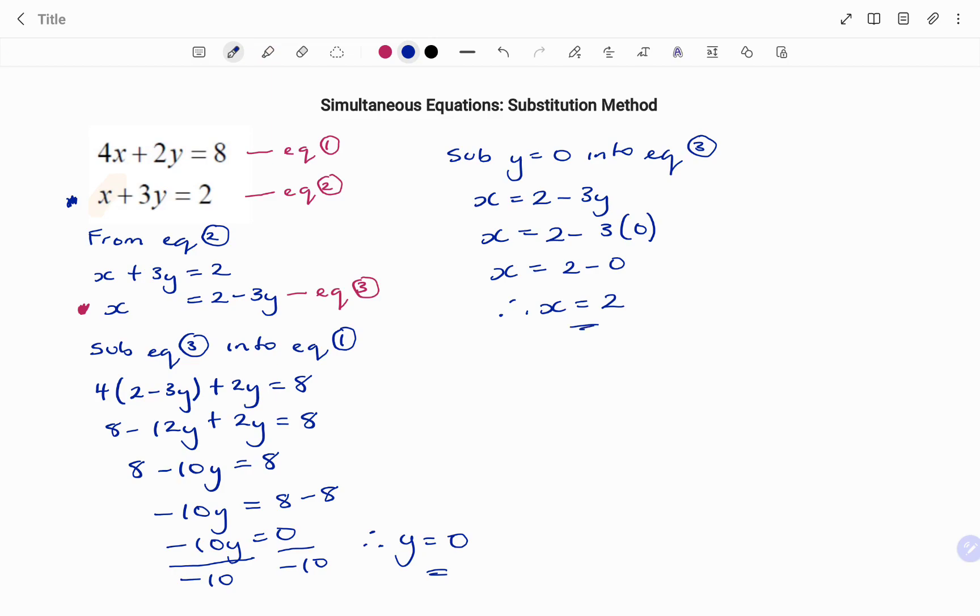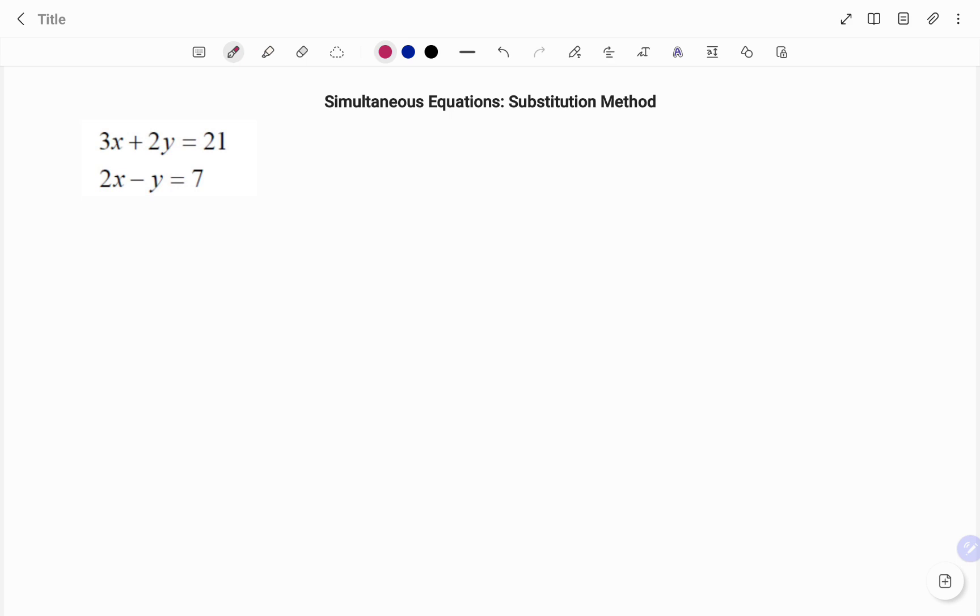Let's look at the second example. In this example, I have 3x plus 2y equals 21. I'm going to tag that as my equation 1. And the second equation, 2x minus y equals 7. That will be my second equation.